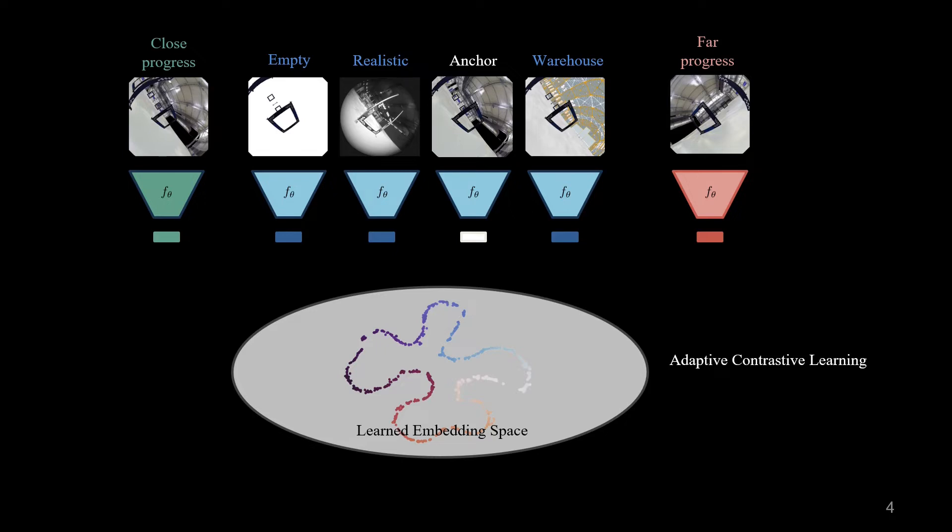This helps the encoder to learn task-related and consistent representation within an environment. Our training pipeline also enhances the invariance of the embeddings from different environments to bridge the scene transfer gap.